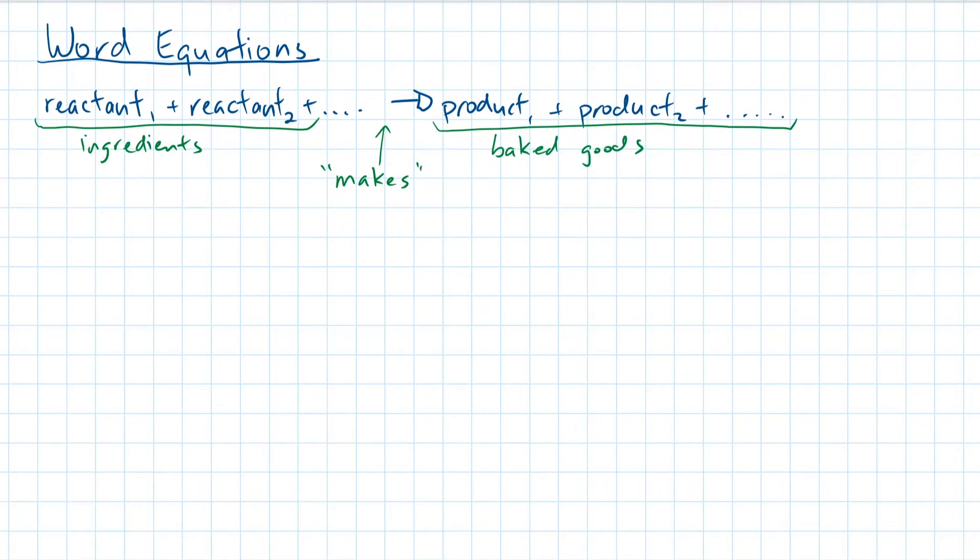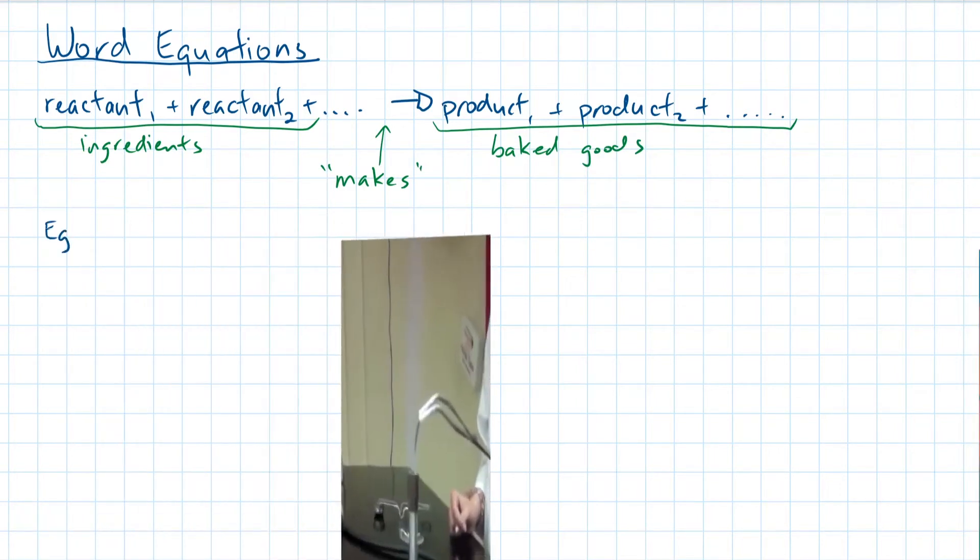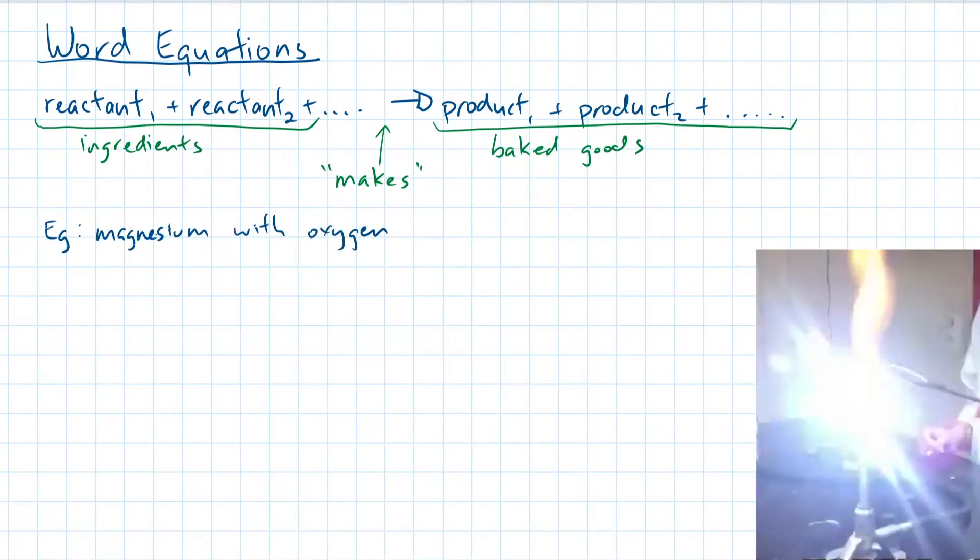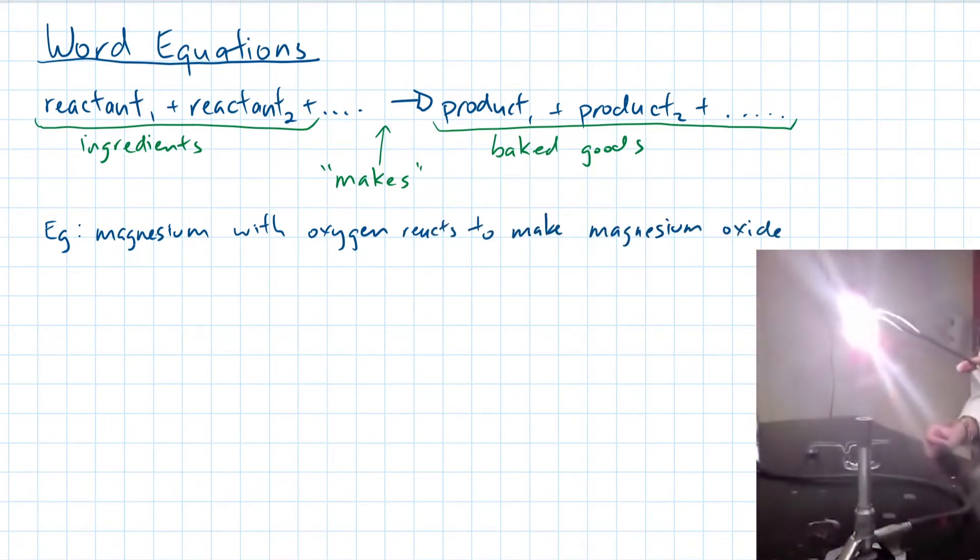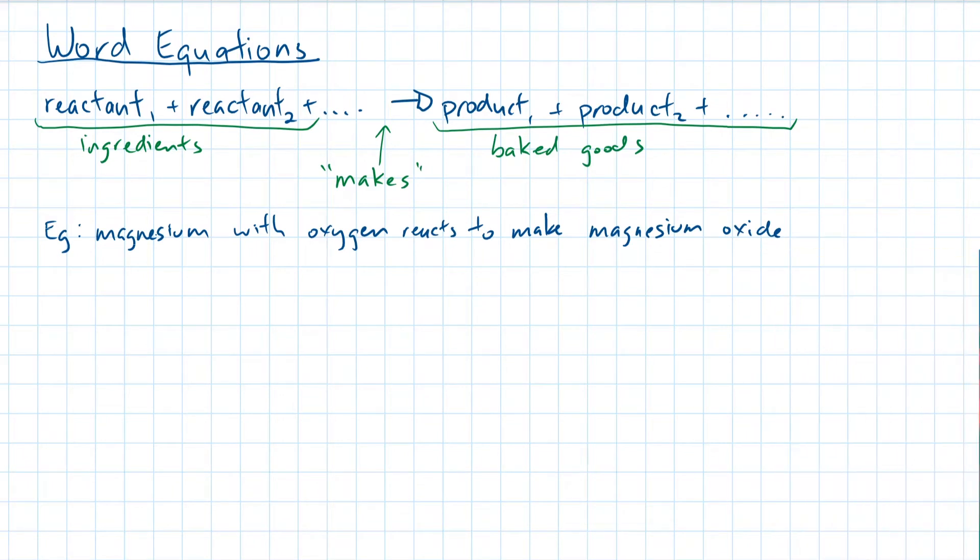Let's go through a few examples. When you ignite magnesium, the magnesium will react with the oxygen in the air to form a white powdery substance called magnesium oxide. Let's describe this chemical reaction using a word equation. Magnesium and oxygen are the ingredients or reactants of the chemical reaction so we place them on the left side of the arrow. The final product, magnesium oxide, is placed on the right.